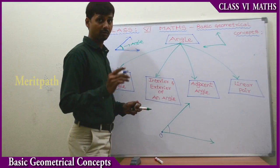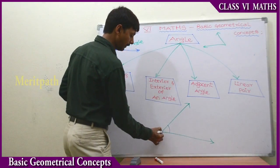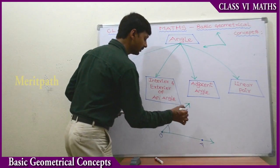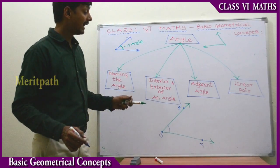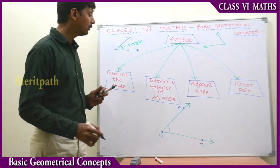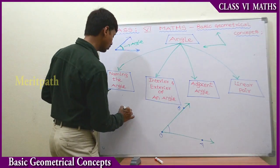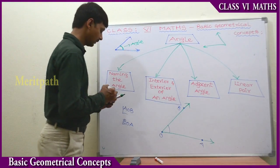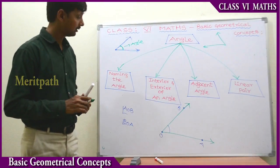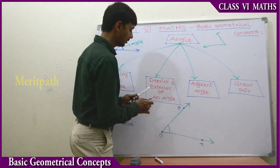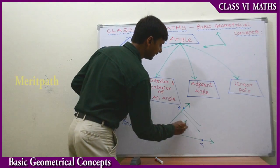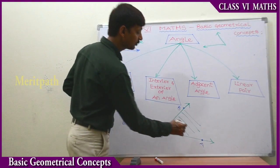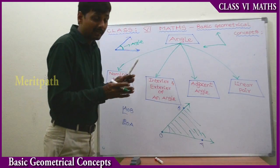Let's take the initial point as O, and one end is A and another end is B. So this is named as angle AOB or angle BOA. Inside of the angle, the region formed is called the interior part of an angle — this is the interior part which is inside the angle.